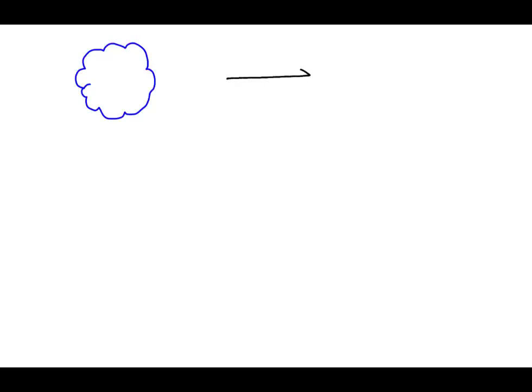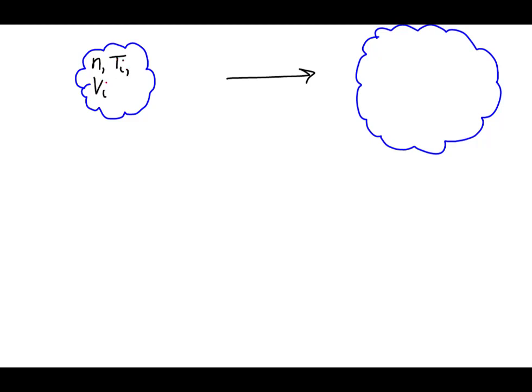Let's start by illustrating the gas in its initial and final states. The gas begins at some initial volume and isothermally expands to a final volume. The gas in its initial state has a certain number of moles, an initial temperature, an initial volume, and an initial pressure.